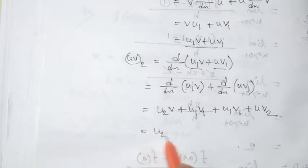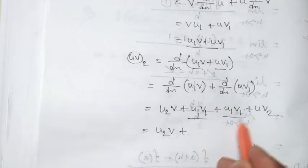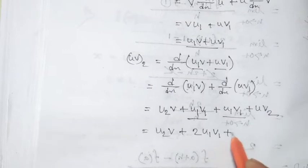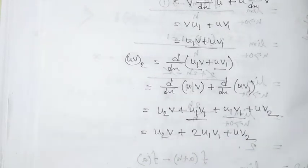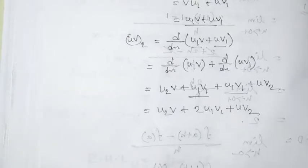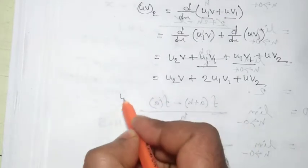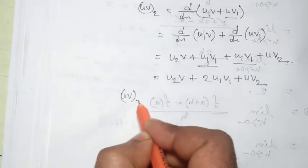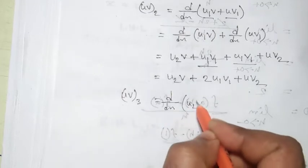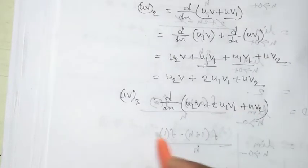This is the example of U_2. We have U_2·V plus U_1·V_1 and U_2·V_1 plus U·V_2. So this is the case for n=2. Now I will write UV_3 = d/dx of (U_2·V plus 2·U_1·V_1 plus U·V_2).